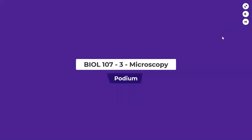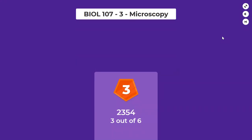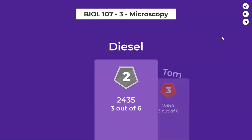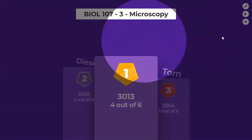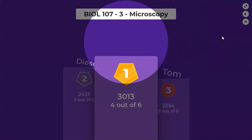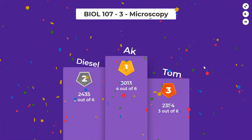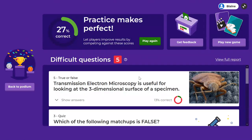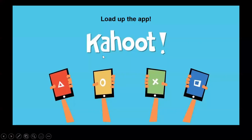Let's see what the podium looks like. Number three: Tom. Number two: Hazel. And the gold goes to AK! Well done. I will be posting these Kahoot playlists on Moodle so you get a chance to review them before the final exam, just as an extra study tool. If I haven't done that already, I'll do it before the midterm.